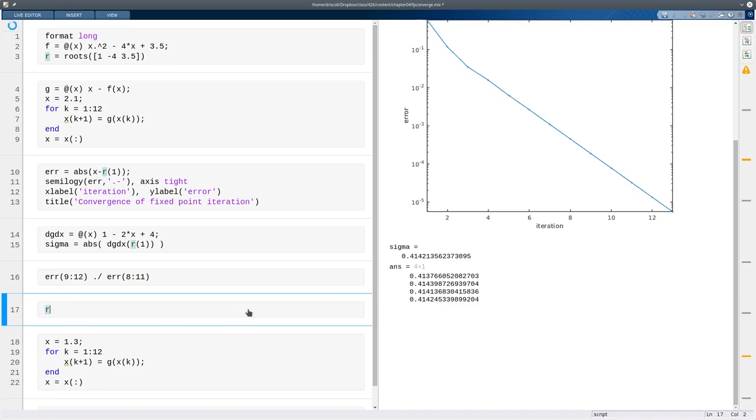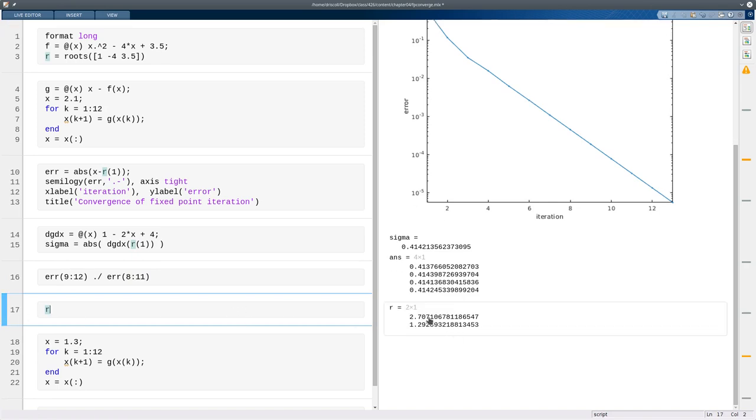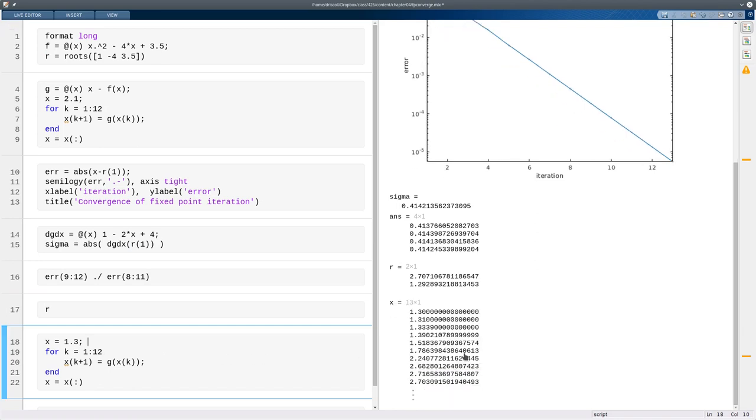But there's another root. So we found the first one, what about the second one? Well, this time I'm going to start at 1.3, which is very close. And when I do the iterations, you see that it does not converge to that point. In fact, it looks like it might be converging to the other one.